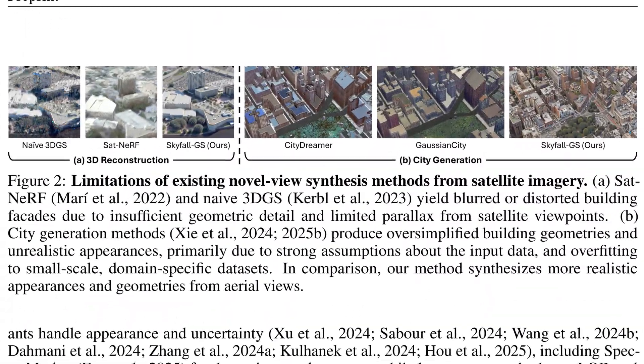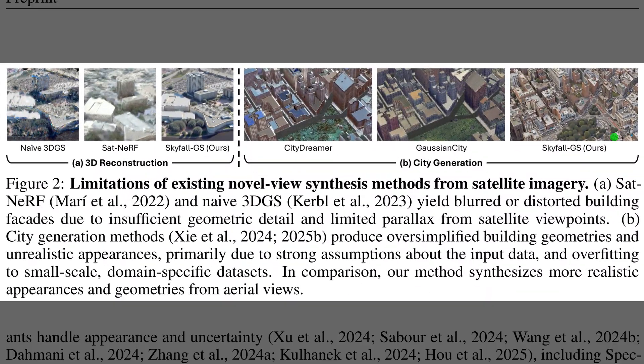Figure 2 contrasts satellite reconstruction and city generation approaches, and highlights why ground navigation breaks. Limited parallax — meaning viewpoints change too little — leaves missing facades and blurry shapes in standard reconstructions. Methods driven by semantic maps and height fields create blocky, toy-like buildings. The Skyfall GS panels show sharper facades and cross-view consistent geometry, so the city looks credible from aerial views.